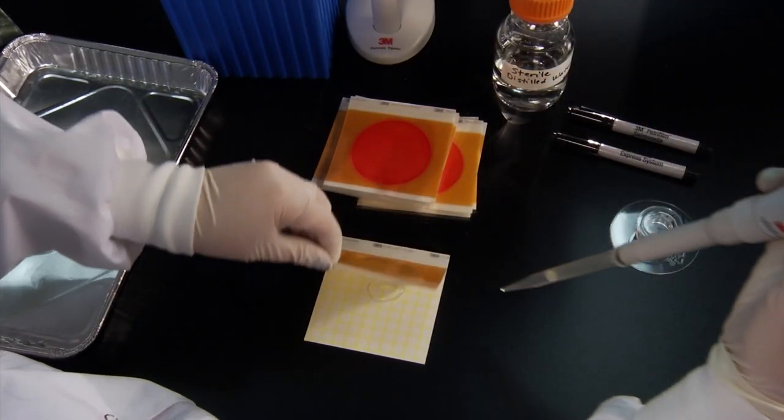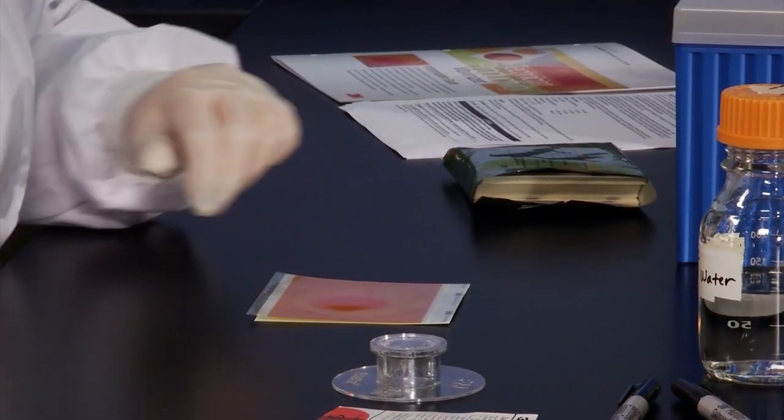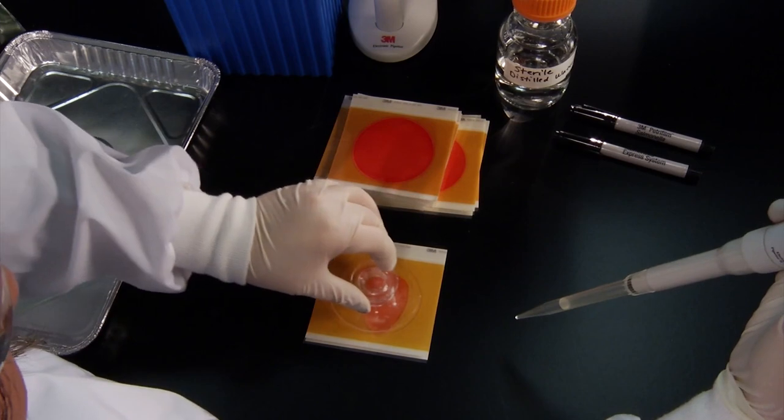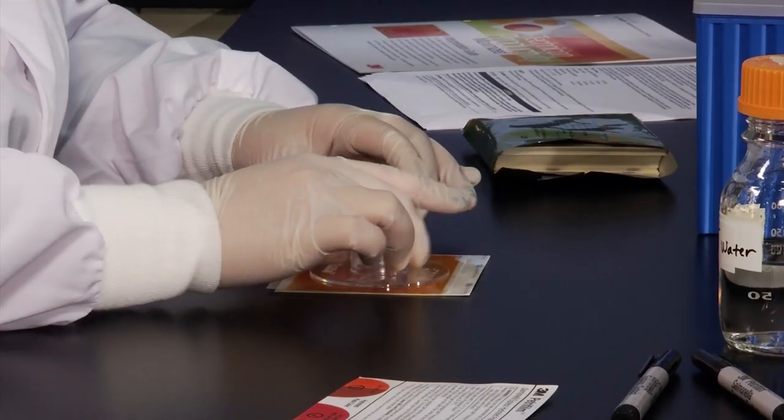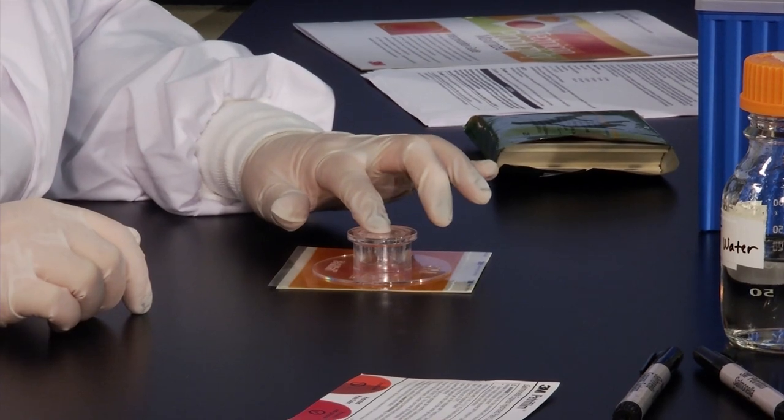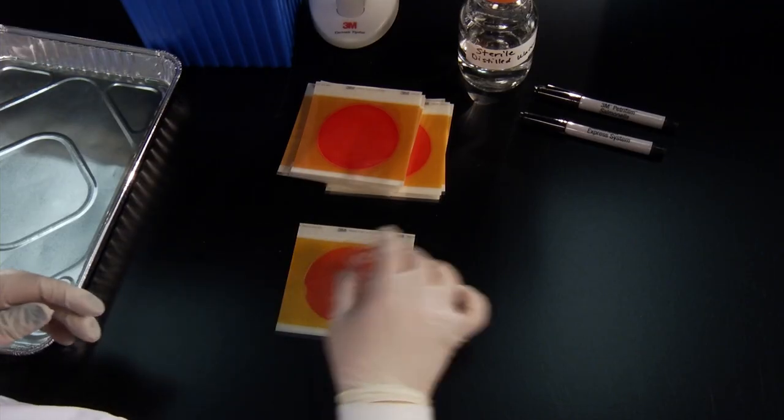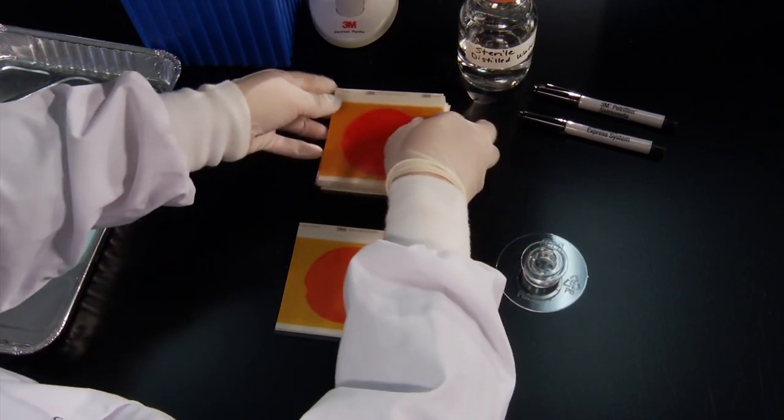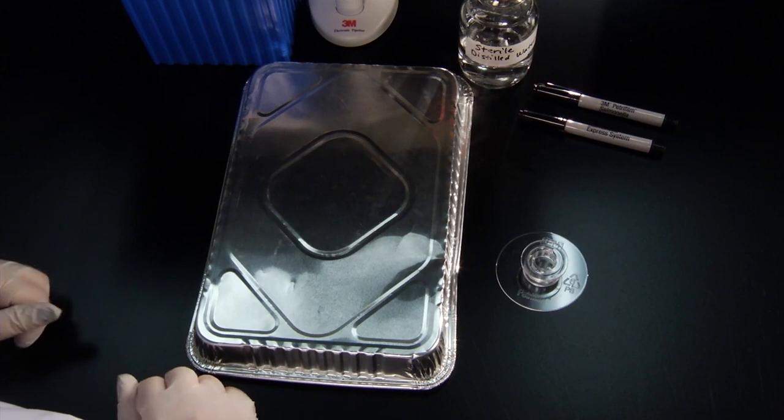Gently roll down the top film onto the diluent to prevent trapping air bubbles and place the 3M PetriFilm flat spreader on the center of the plate. Press gently on the center of the spreader to distribute the diluent evenly. Remove the spreader and leave the plate undisturbed for at least 1 minute.